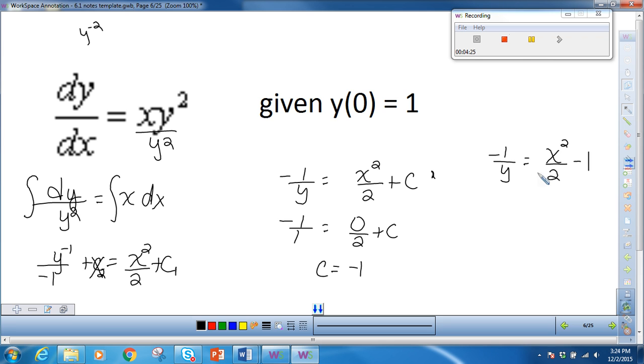So now I have to solve for y, and I get, just taking the reciprocal of this, I get y is equal to negative 1 over x squared over 2 minus 1. And I could clean that up a little bit if I were so inclined. I'm not really, so I'm going to leave that the way that it is.